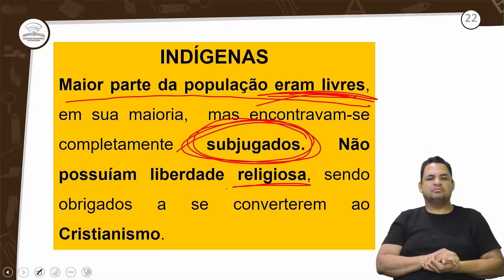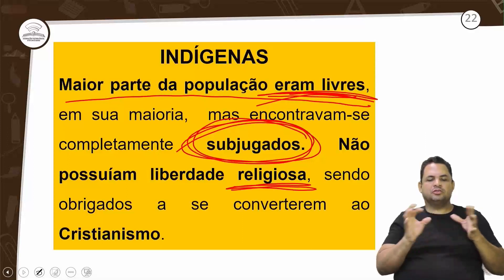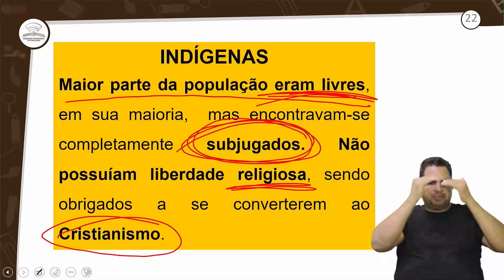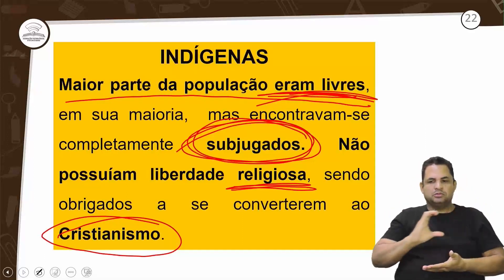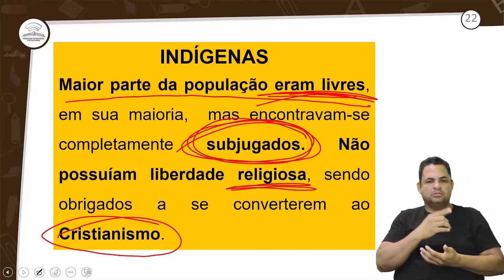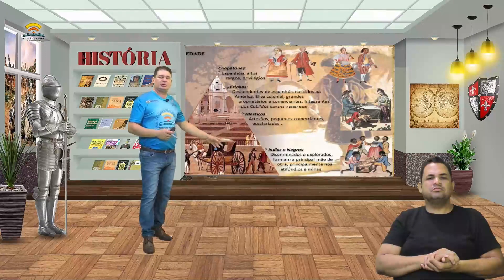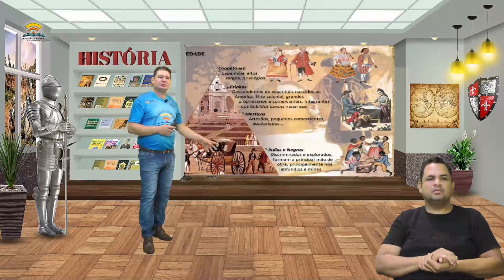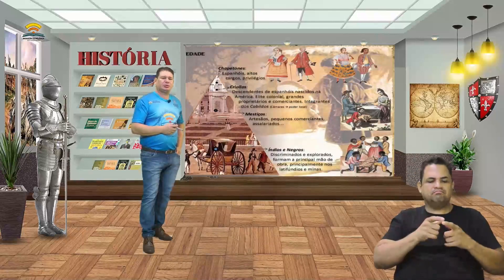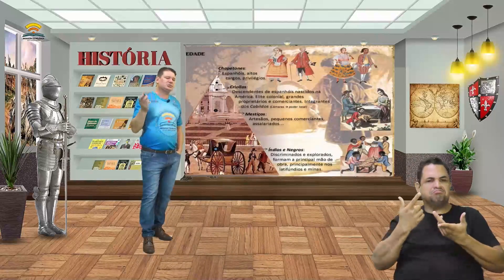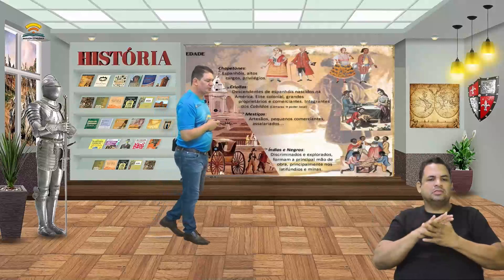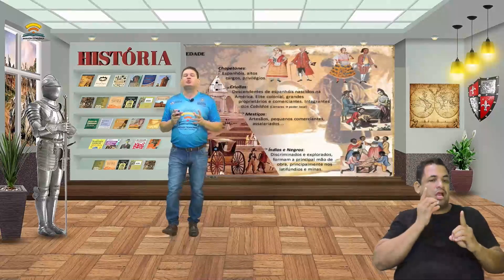Não possuíam liberdade religiosa, sendo obrigados a se converter ao cristianismo. Na pirâmide social, no final, temos os indígenas e os negros — a maioria indígena. O negro vai entrar na sociedade em outro momento. O indígena não teve de cara a escravidão, mas teve a subjugação, o controle.